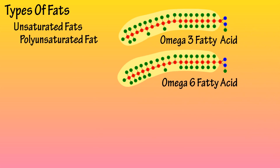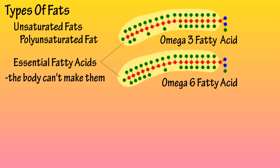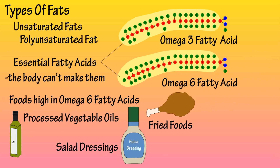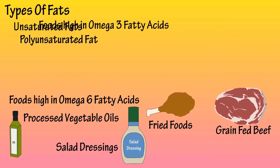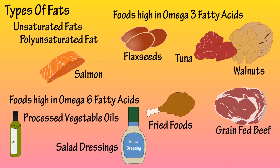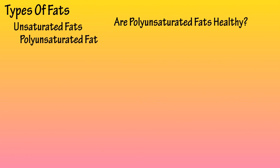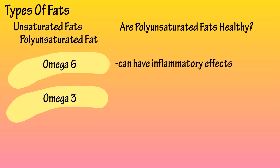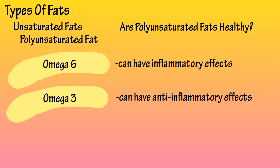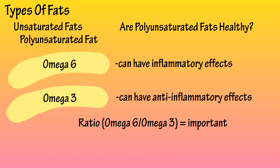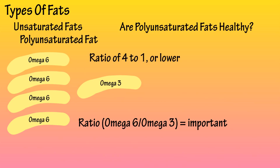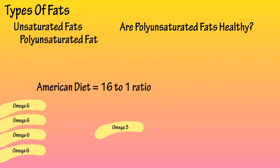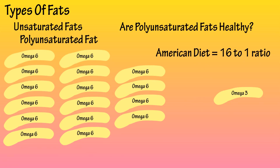The omega-3 and omega-6 fatty acids are considered essential because the body cannot make these on its own. Foods high in omega-6 fatty acids include processed vegetable oils, salad dressings, fried foods, and grain-fed beef. Foods rich in omega-3 fatty acids include flax seeds, walnuts, salmon, and tuna. Are polyunsaturated fats healthy? Research suggests that omega-6s can have inflammatory effects and omega-3s can have anti-inflammatory effects, so the ratio of these fats has been shown to be important. A ratio of 4 to 1 omega-6 to omega-3 or lower has shown to decrease inflammation and lower the risk of other diseases. The average American diet currently has a ratio of 16 to 1. Once again, it's about moderation.